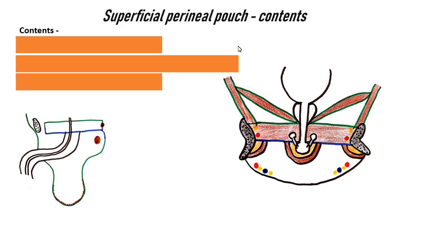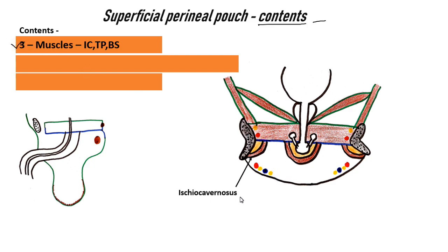Now we will see the contents. In this region we have three muscles. The first muscle is the ischiocavernosus. It will cover the crus of the penis in case of the male, and the crus of the clitoris in case of the female.